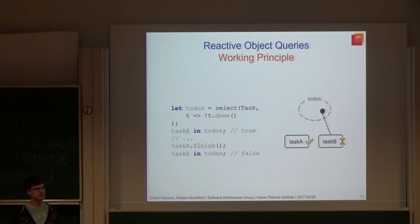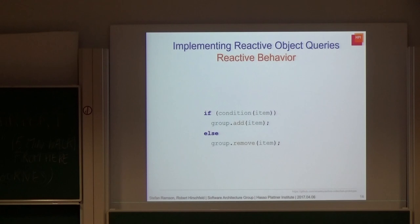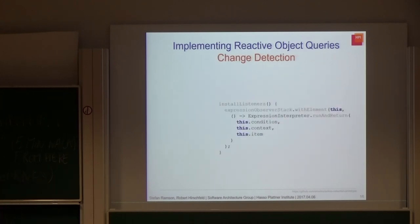The reactive part of reactive object queries is actually pretty straightforward to implement: whenever an item updates, we just check the condition for that item again and update the group membership accordingly. However, the change detection part is far more challenging. Let's look at a JavaScript implementation. The following explanation is just a quick excerpt to give a rough impression of what we actually have to deal with.